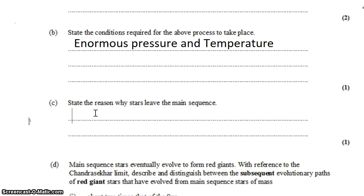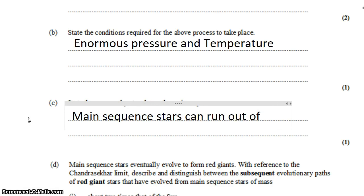So that stops. It leaves the main sequence when they run out of fuel. So the reason would be that main sequence stars can run out of hydrogen. Maybe a better way to say that would be when there is not enough hydrogen for sufficient fusion to take place